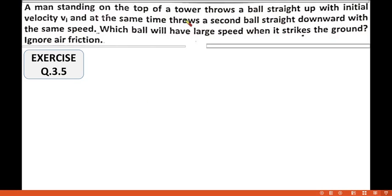A man standing on the top of a tower throws a ball straight up with initial velocity vi and at the same time throws a second ball straight downward with the same speed. Which ball will have large speed when it strikes the ground? Ignore air friction.